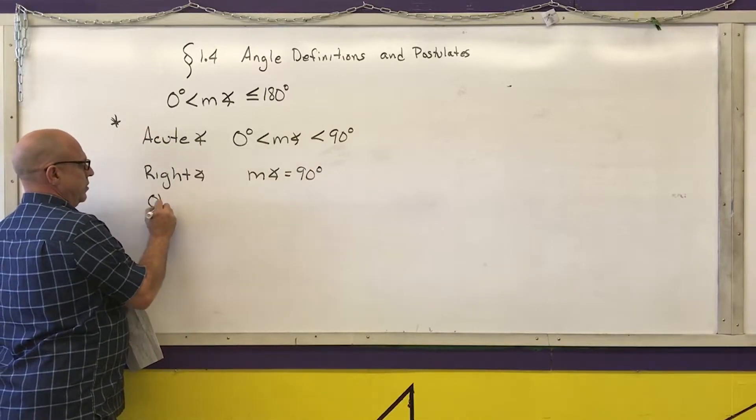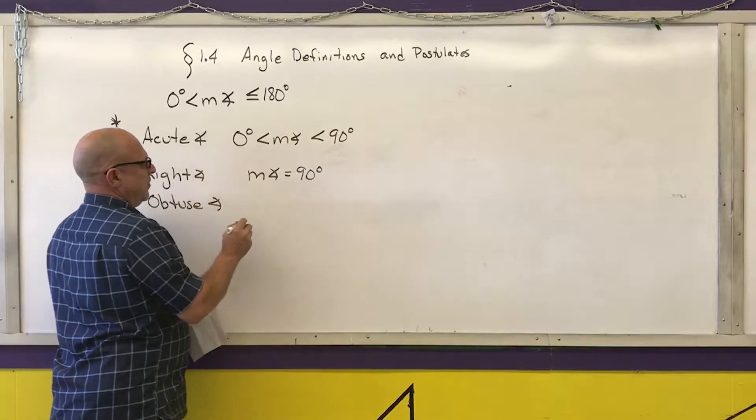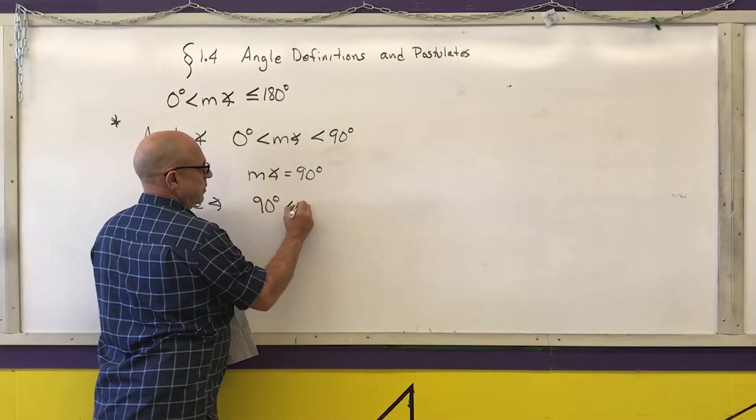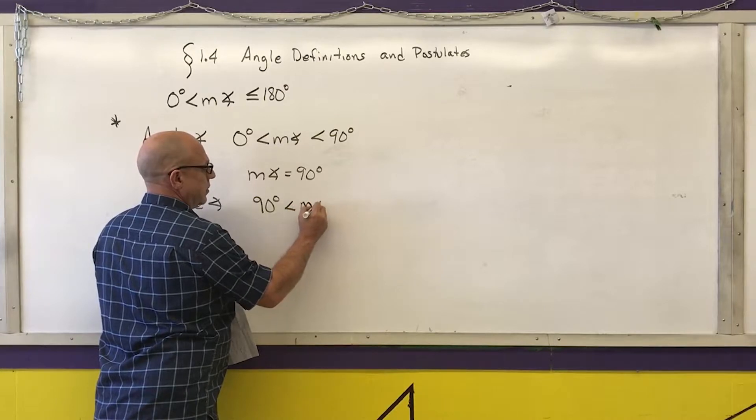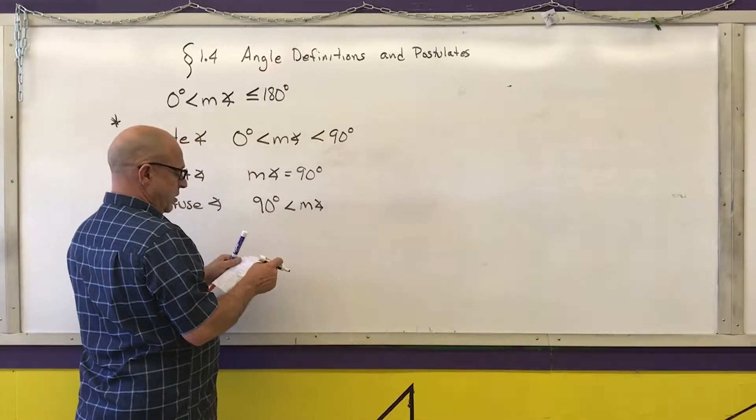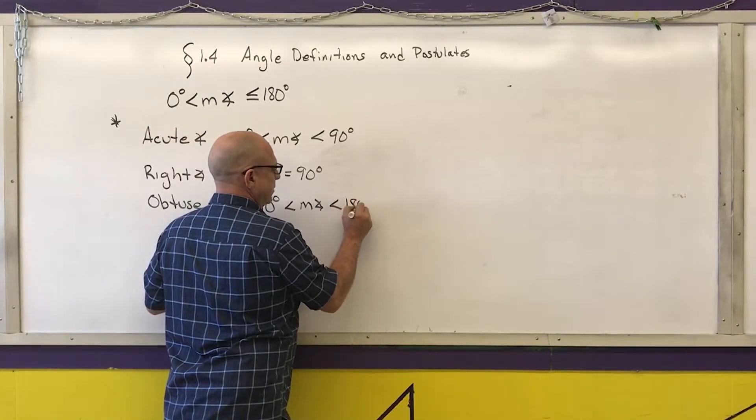An obtuse angle has a measurement that's more than 90 degrees but it is less than 180 degrees.